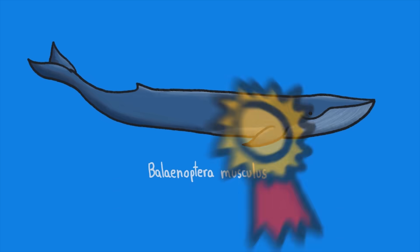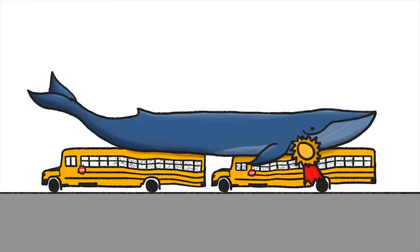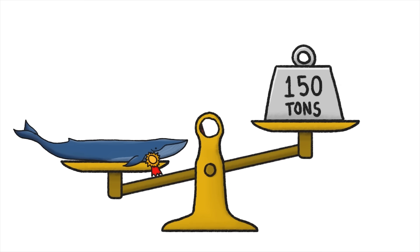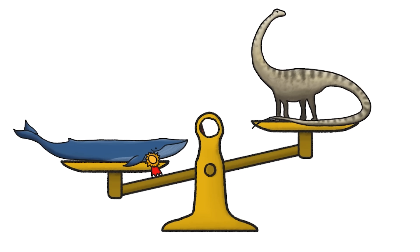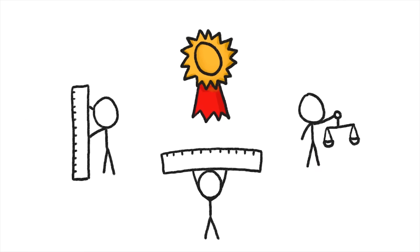Blue whales are the biggest animals ever to exist on Earth. They can weigh upwards of 150 tons, which is more than the largest dinosaurs, but the blue whale is not the biggest living thing. That title goes to... well, it depends on what you mean by biggest.